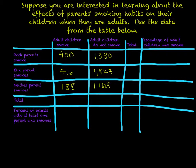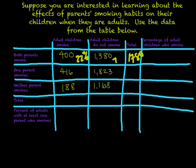Looking at the data, we have adult children who smoke — a very low number — and adult children who do not smoke, which is about three times the amount. We have 400 smokers compared to 1,780 total (400 + 1,380), which means smokers are about 22% and non-smokers are 78%.